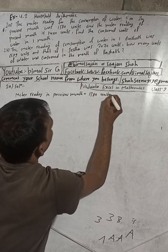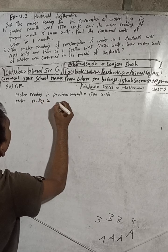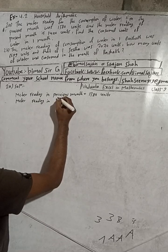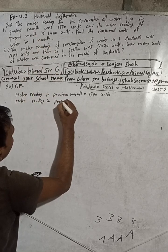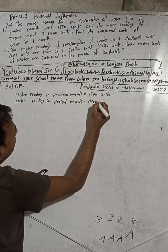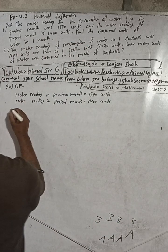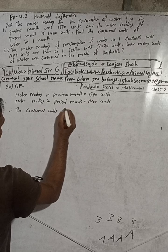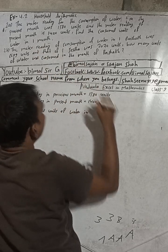Meter reading in the previous month is 1380 units. Therefore, the consumed units of water in one month can be calculated.